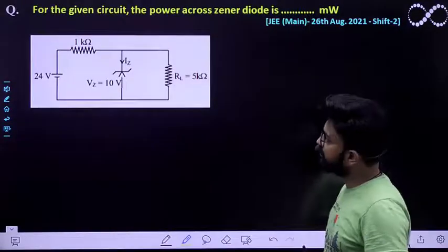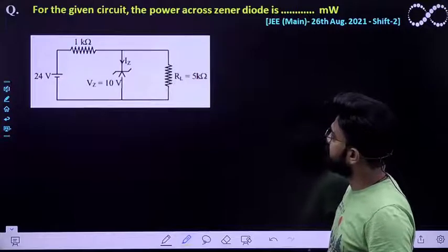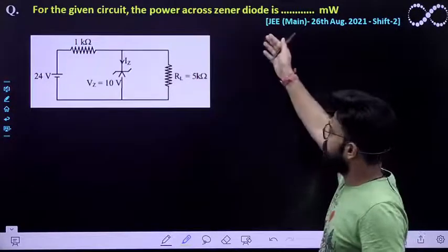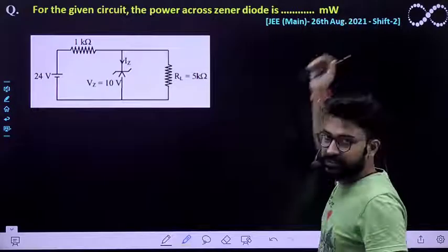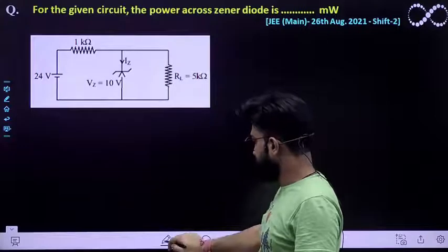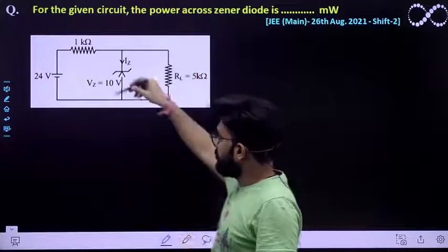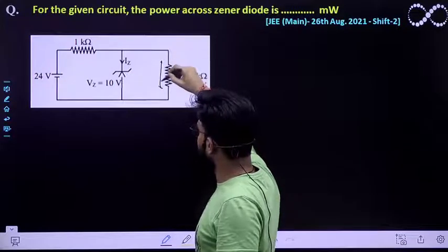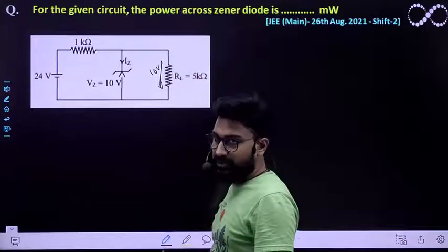So let us see this question first. Question says for a given circuit the power across Zener diode is, you have to find out the power across Zener diode in milliwatt. This combination has been given to you. We already know the Zener diode has a potential of 10 volts. So this combination, the load would also have a potential of 10 volt.